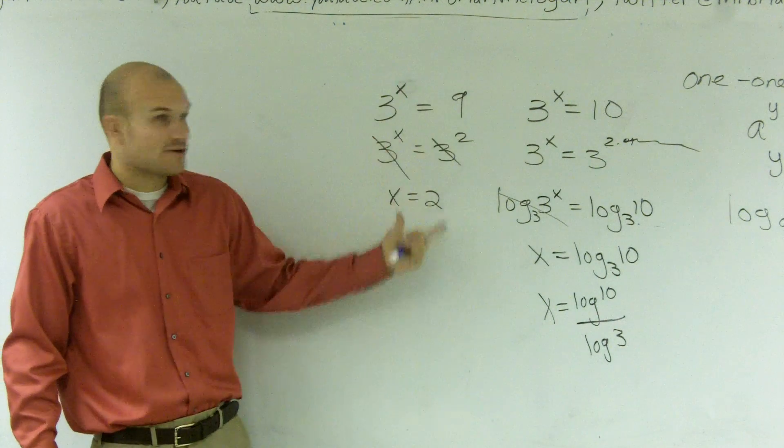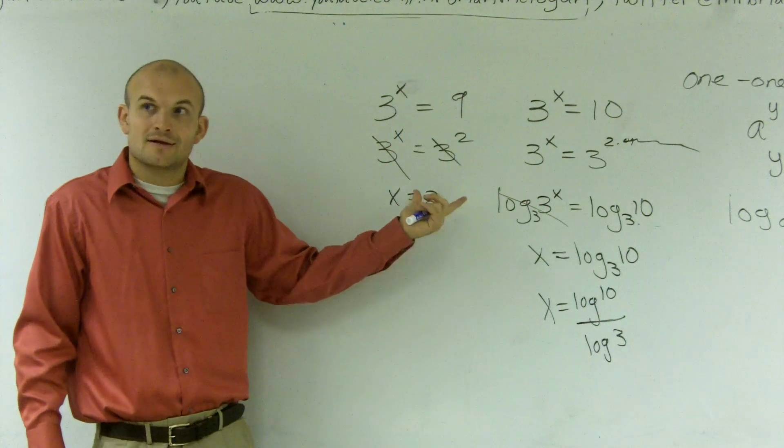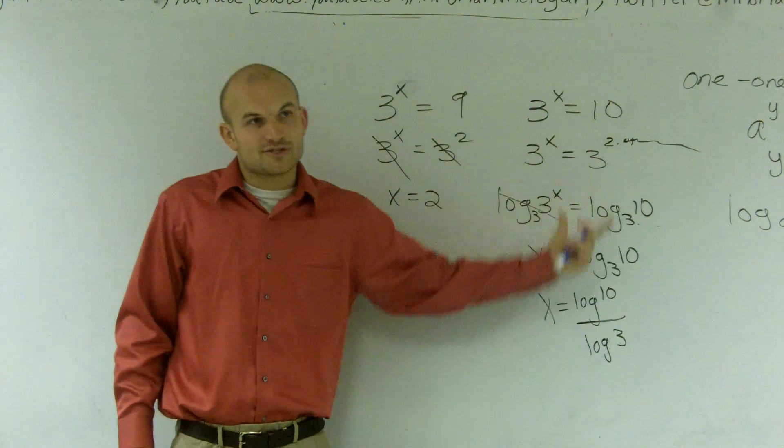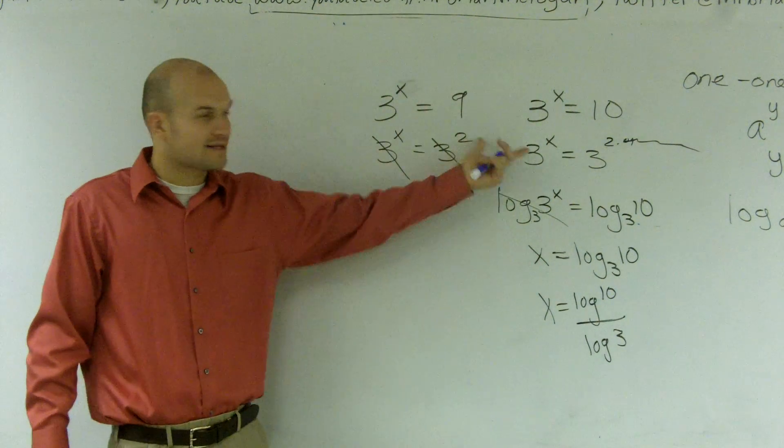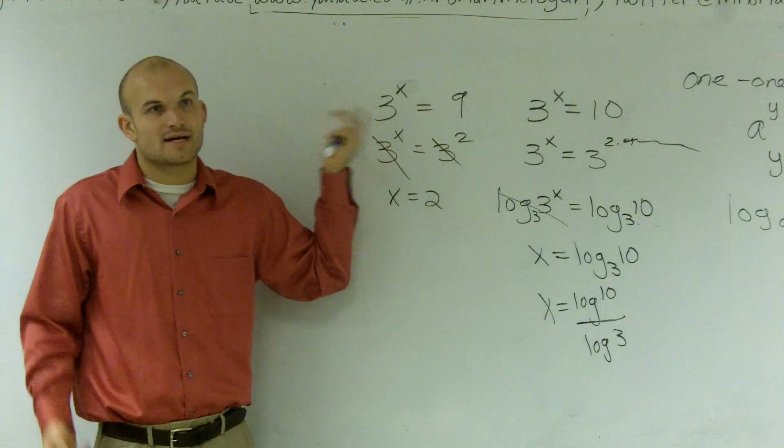So look for this first because that's the easiest way to do it, right? But then, if you can't get it like this, you can solve it that way. You can solve this one like that too. You can take the log base 3 of both sides, right?